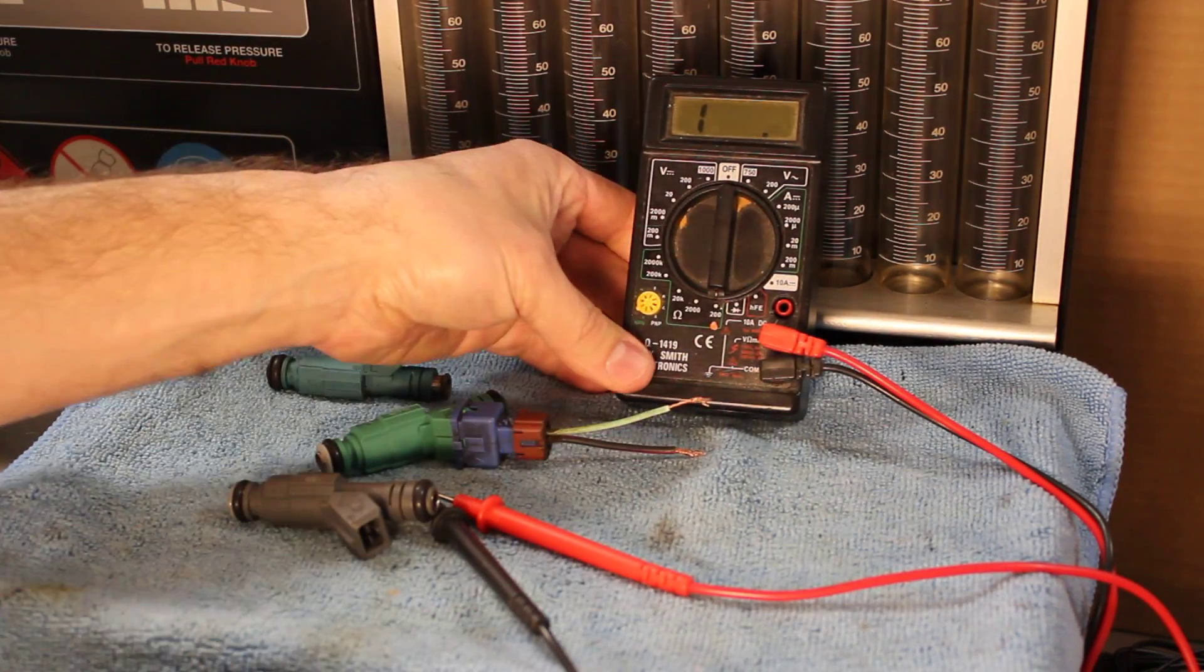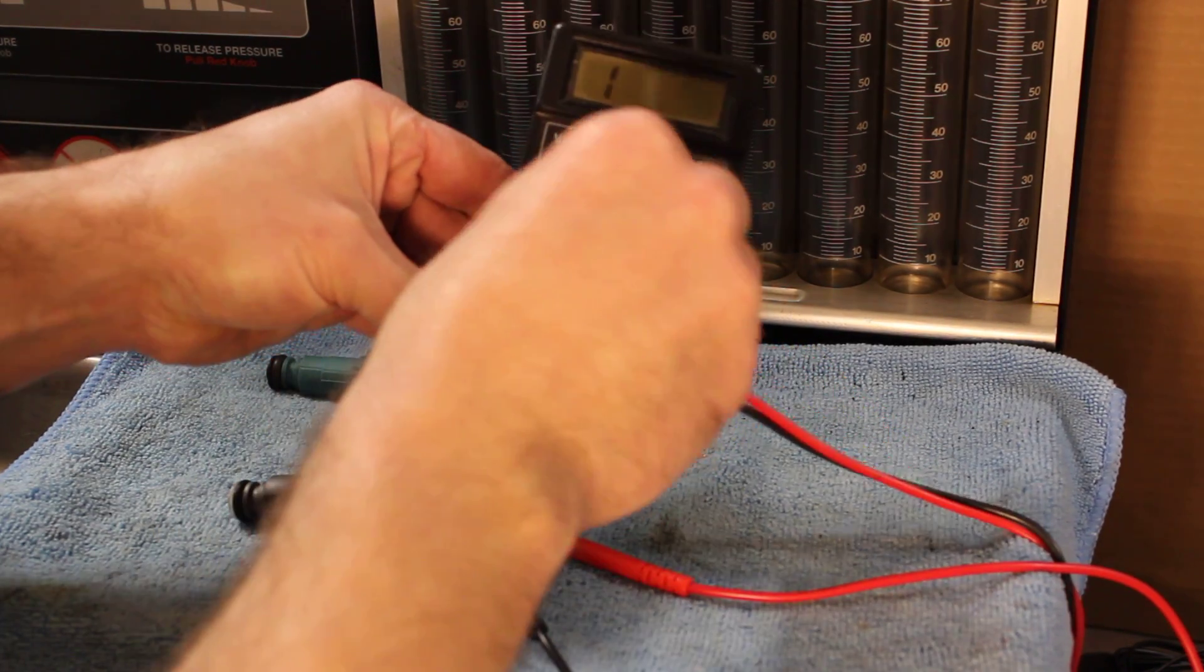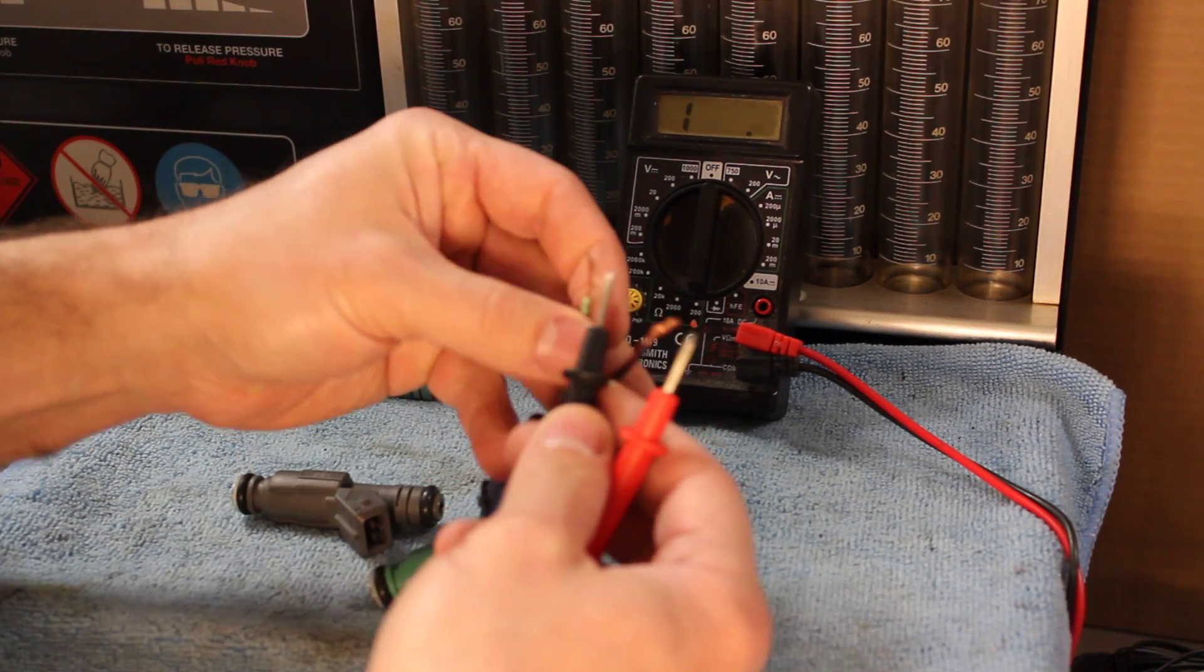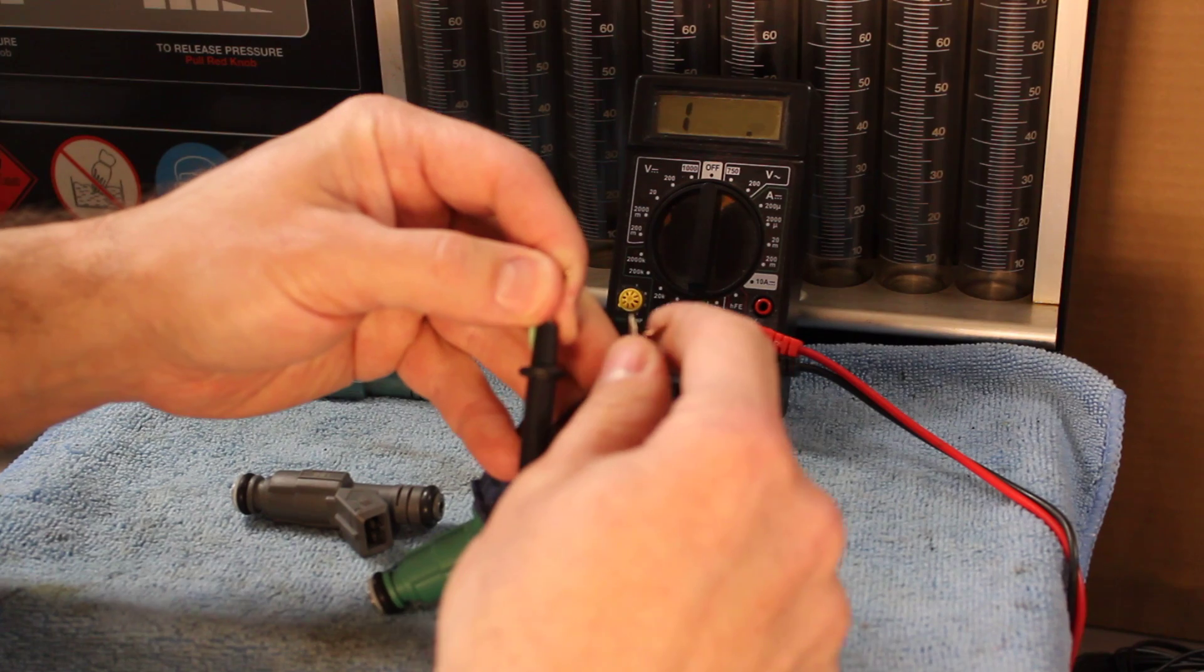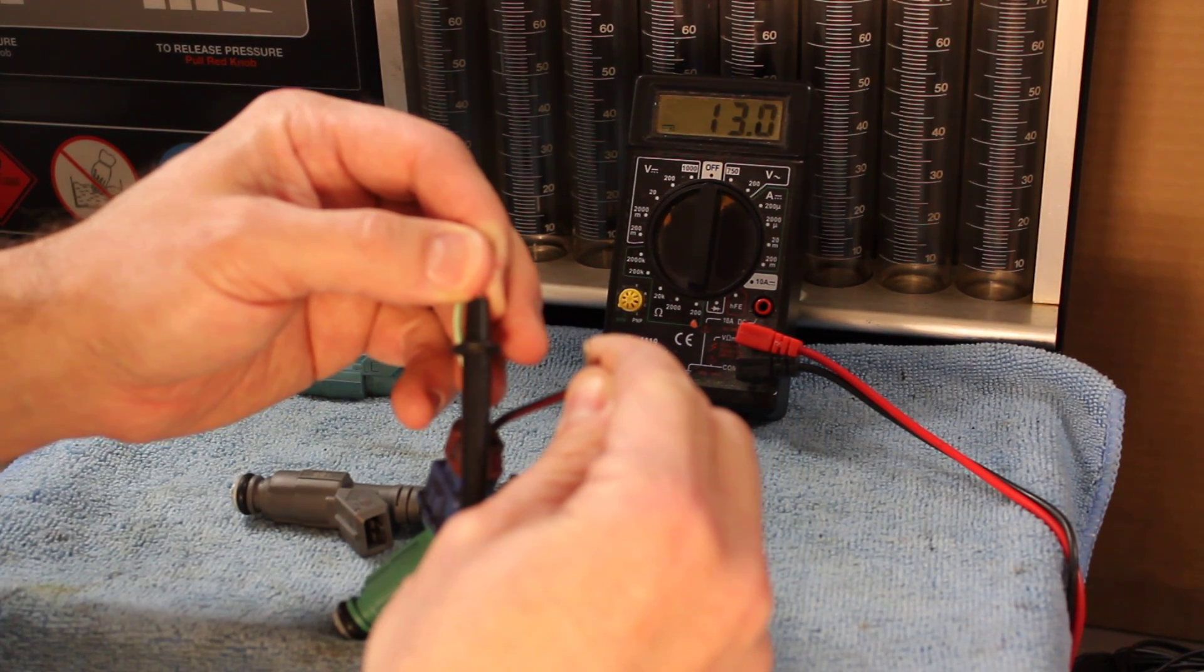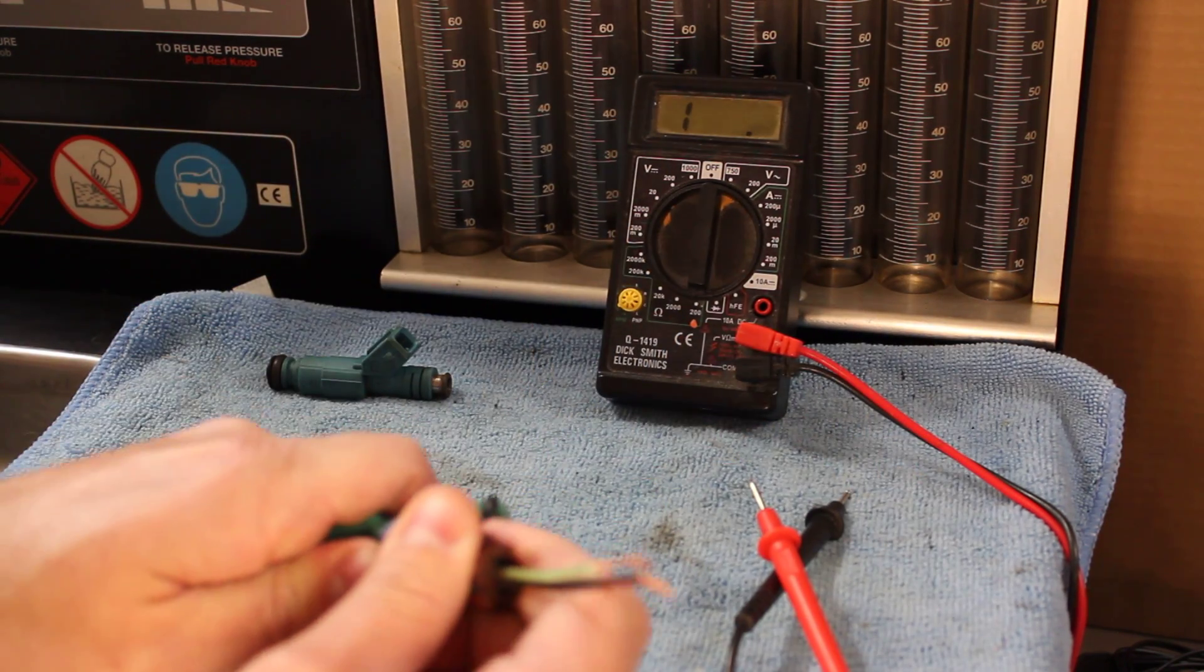Turn your multimeter to ohms, set it to 200 on the machine. Get the wires, and now we can just check the resistance. So that one's settling at 12.9. Let's check this other injector.